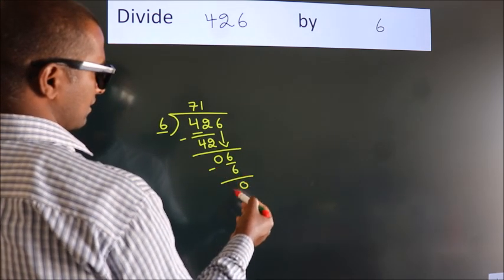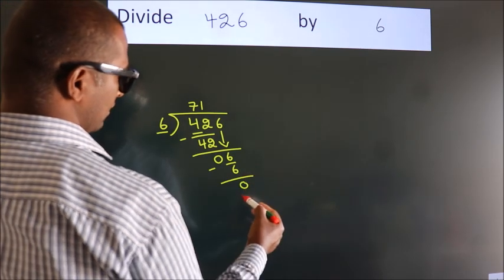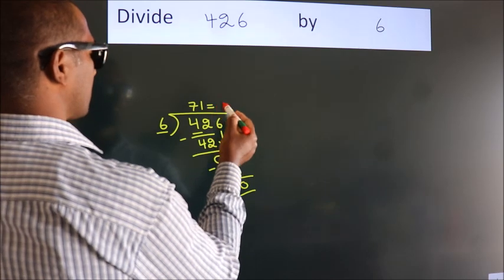After this, no more numbers to bring it down and we got remainder 0. So this is our quotient.